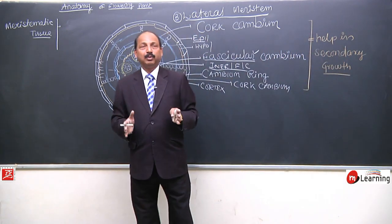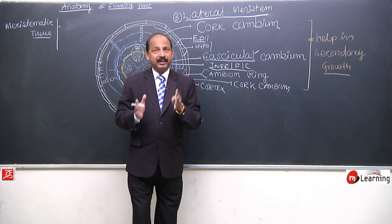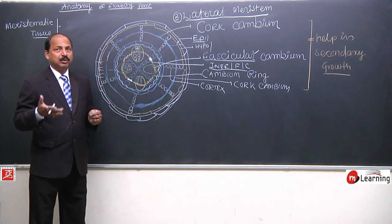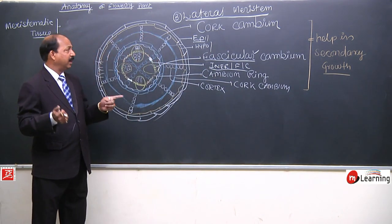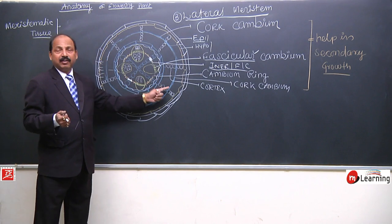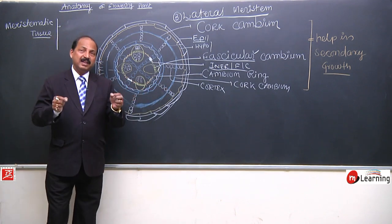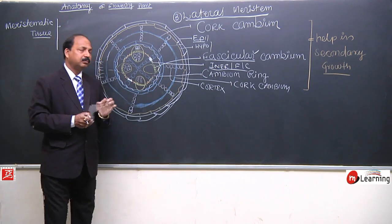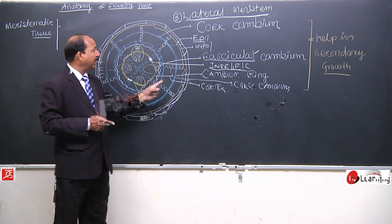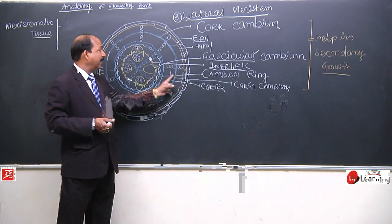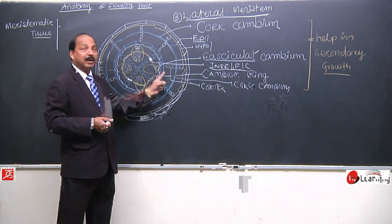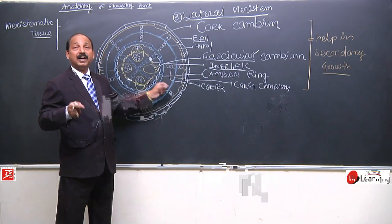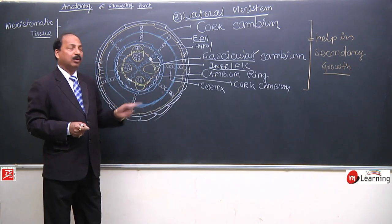So we saw two examples. Secondary growth — which tissues participated? Lateral meristem, which are lateral in position. And which tissues were those? Fascicular cambium, inter-fascicular cambium, cambium ring, and cork cambium — these are the examples of lateral meristem. Secondary growth involves participation of lateral meristem, which are lateral in position.